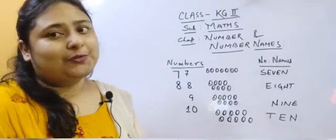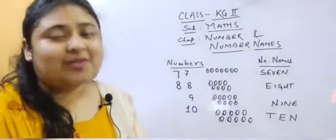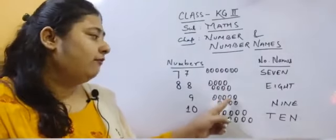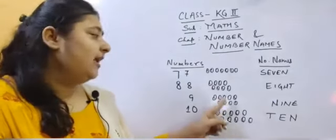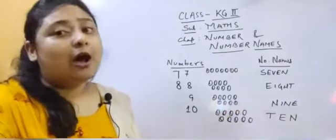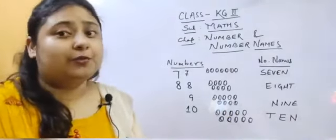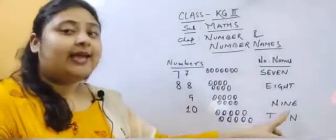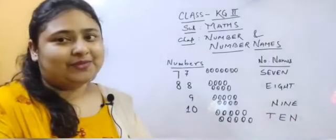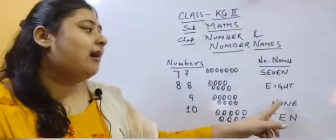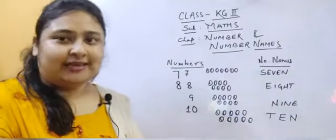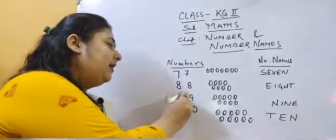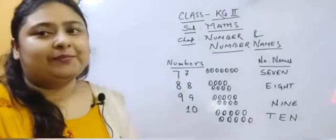Moving on to our next number, that is number 9. Children, let's count: 1, 2, 3, 4, 5, 6, 7, 8, 9. So how many balls are there, children? There are 9 balls. Now let's spell number 9: N-I-N-E. Children, let's repeat it once more: N-I-N-E. How do we write number 9? It is very easy — make one circle and from here the circle gives a straight line. This becomes number 9.